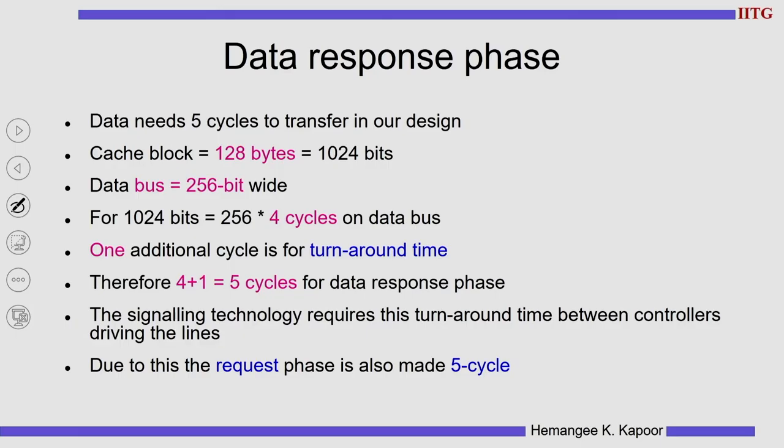The data response phase depends on the size of the block being transferred, and is architecture specific. We are discussing the SGI Challenge, and if the blocks are 128 bytes — which is 1024 bits — we need to transfer 1024 bits on the bus and the bus is 256 bits wide. So you are going to take 4 trips to do this work, sending 1024 bits over 4 clock cycles.